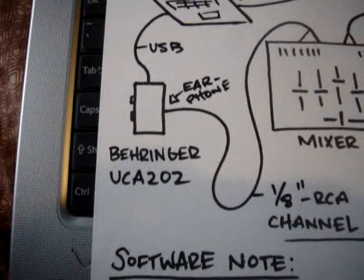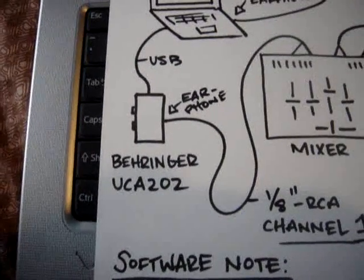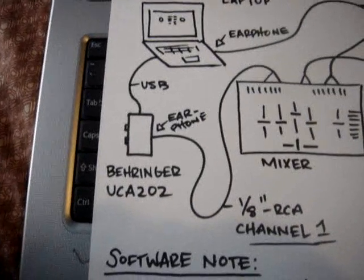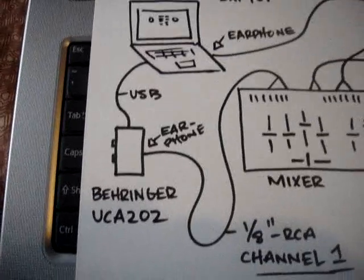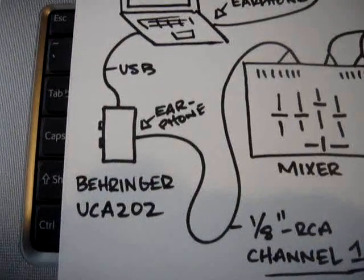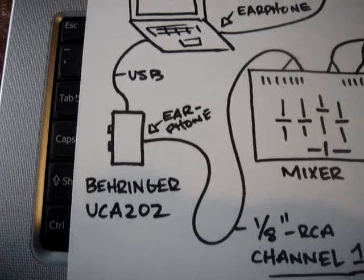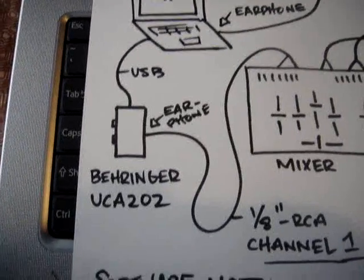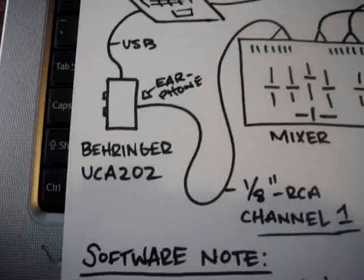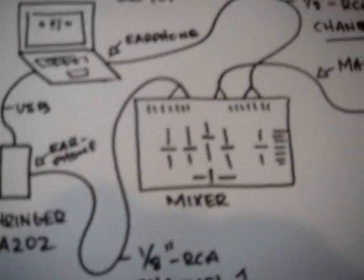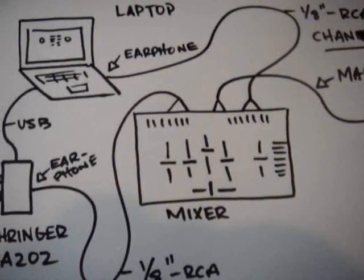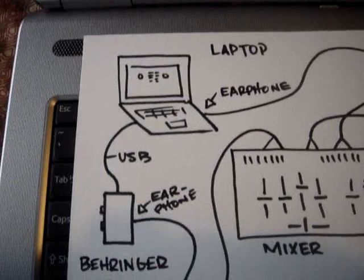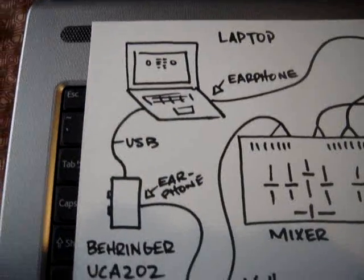The Behringer UCA202 is an audio interface with both input and output, so you can use it for recording, but I'm using it as a USB audio output to get audio to my mixer. This gives me two different channels, two different connections, and two different audio sources coming into my mixer.